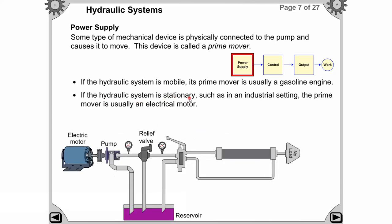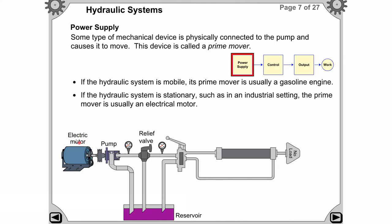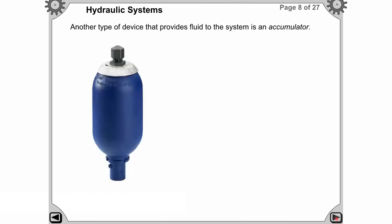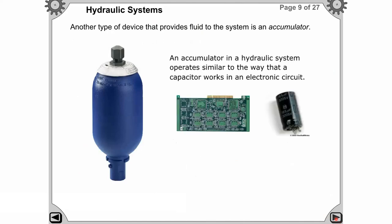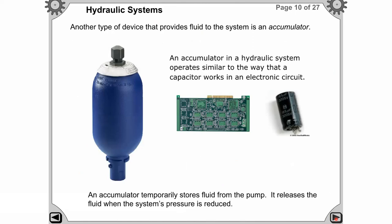If the hydraulic system is stationary, the prime mover is an electric motor. The pump is attached to the electric motor, which helps the pump flow fluid through the hydraulic system. Also, one mechanical device in the power supply is called the accumulator, which provides fluid to the system. The accumulator will be discussed in later sessions in detail.